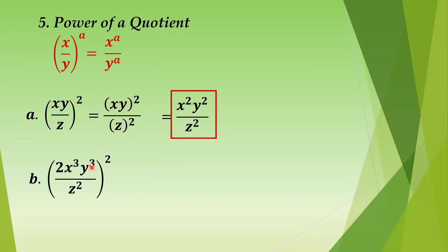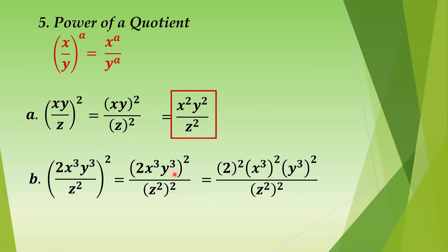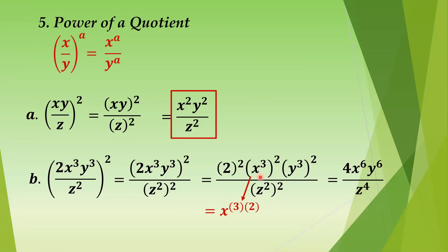Letter B: the quantity 2x cubed y cubed over z squared, all raised to 2. Distribute the exponent to numerator and denominator: 2x cubed y cubed quantity squared, over z squared quantity squared. Then applying power of a product to the numerator: 2 squared, times x cubed squared, times y cubed squared, over z squared quantity squared. So 2 squared is 4, x raised to 3 times 2 is x raised to 6.